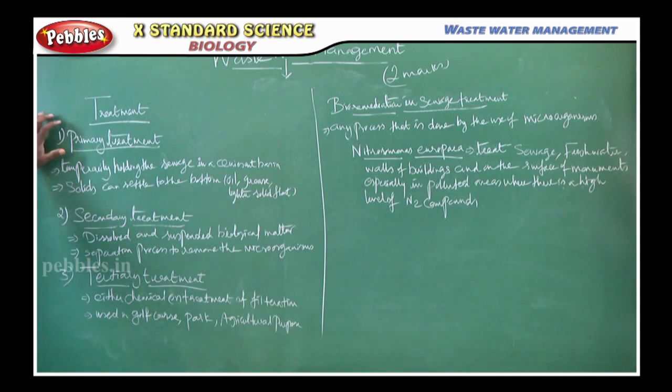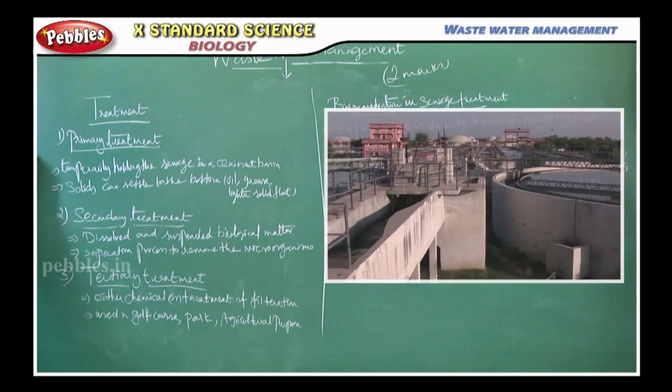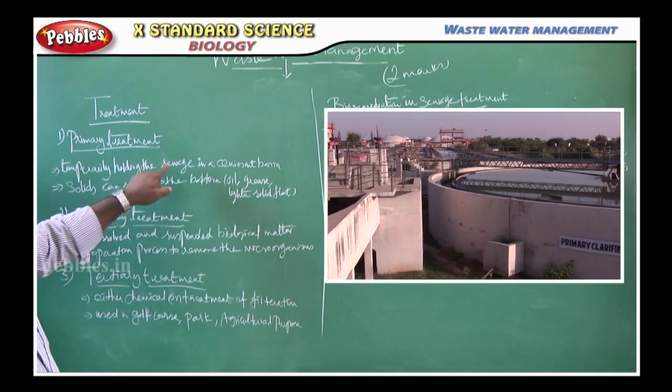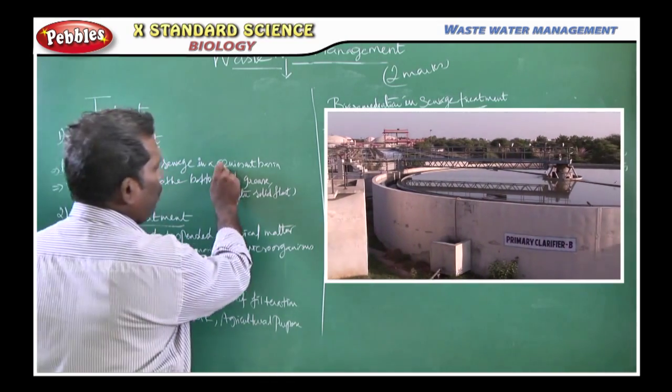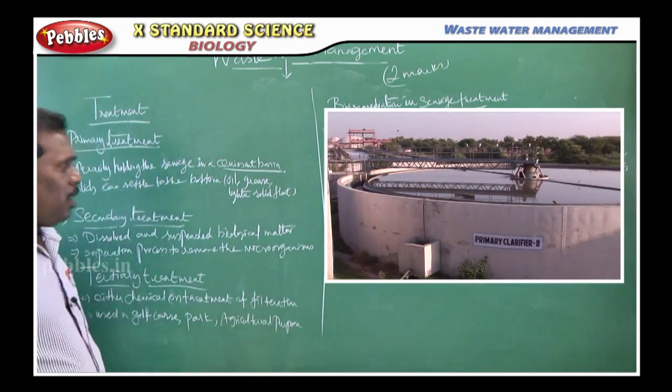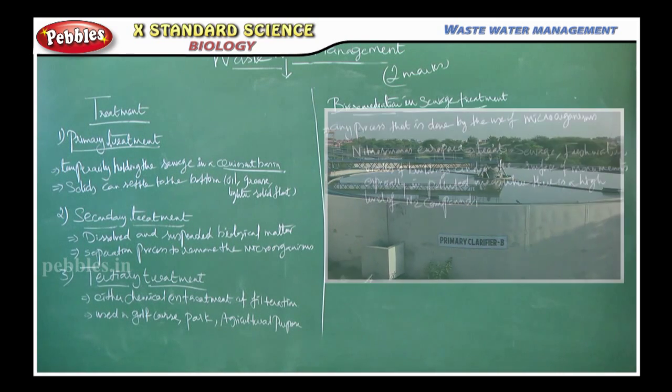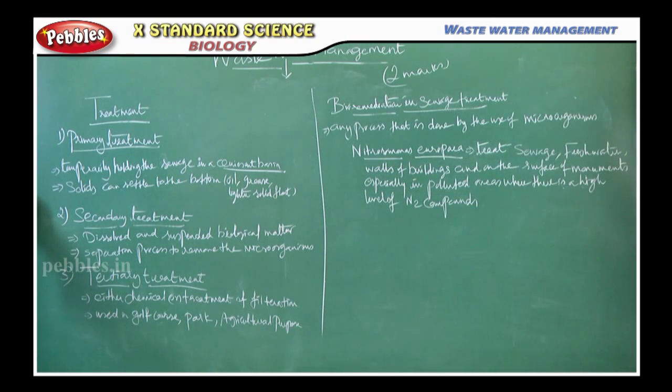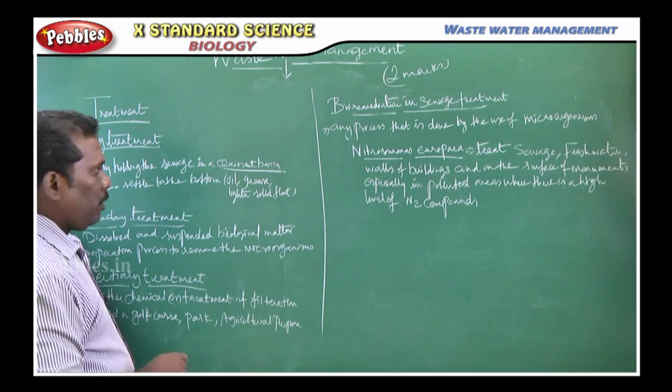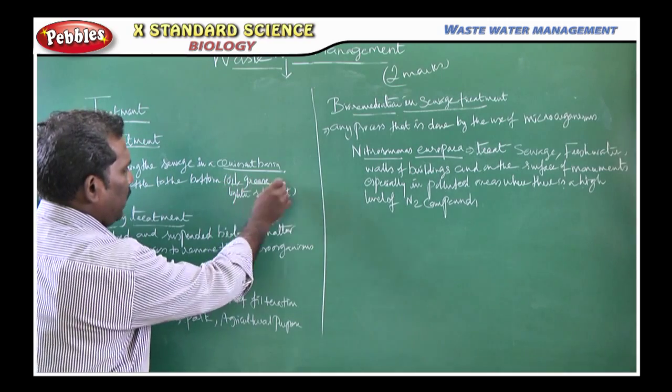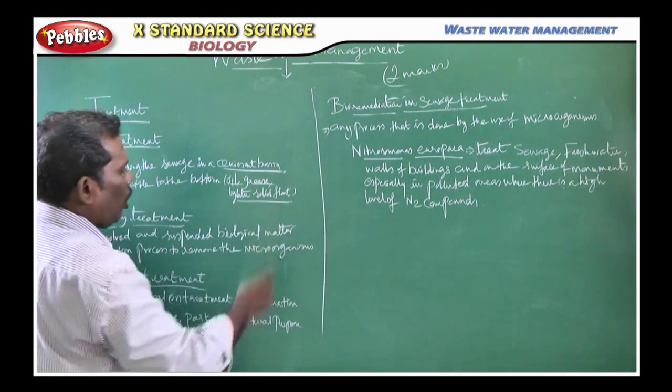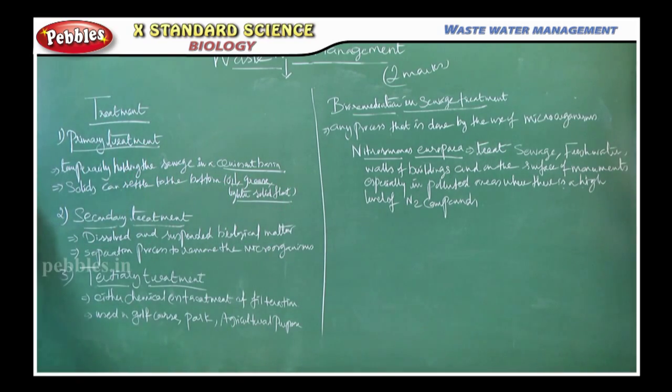The first method is primary treatment. In primary treatment, the waste is temporarily held in a quiescent basin. This is an expected question - what is primary treatment? Here, the solids can settle to the bottom. For example, oil, grease, and lighter solids; these are all floated in the primary treatment of sewage.